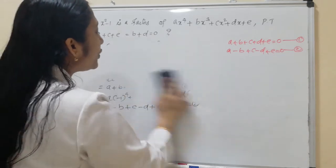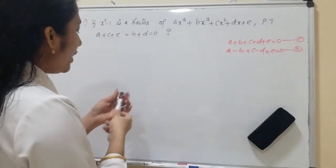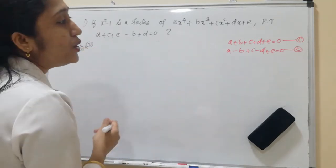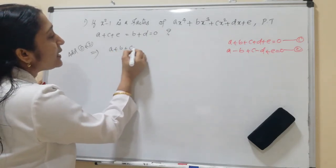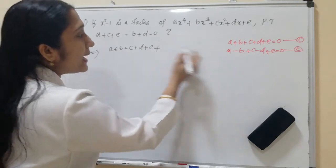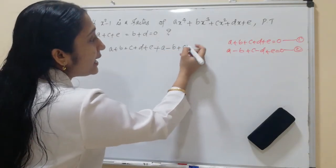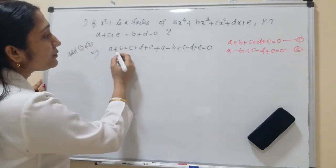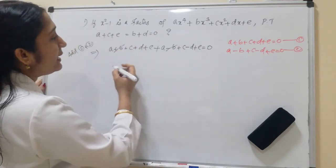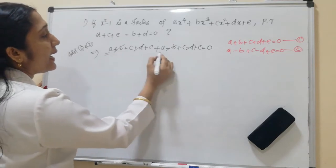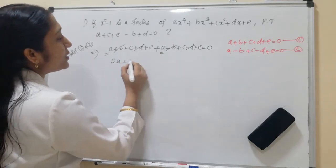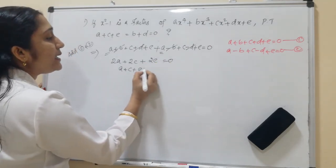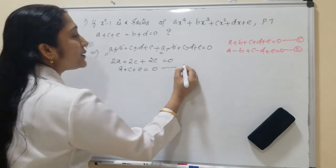Now, adding Equation 1 and Equation 2: (a + b + c + d + e) + (a - b + c - d + e) = 0. Here +b and -b cancel, and +d and -d cancel, leaving 2a + 2c + 2e = 0. Dividing by 2, we get a + c + e = 0, which is Equation 3.